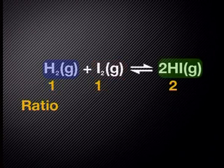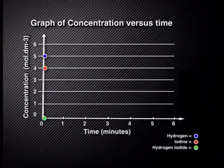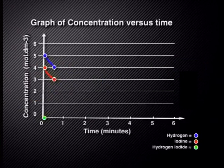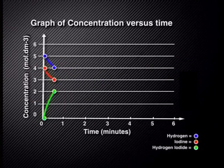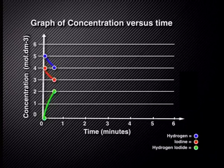But the ratio between hydrogen and hydrogen iodide is one to two. So, while both reactants decrease by one mole per decimeter cubed, the product, hydrogen iodide, increases from zero to two moles per decimeter cubed in the same time interval.